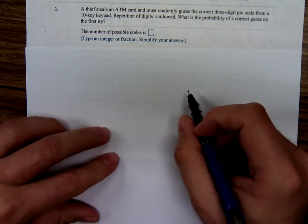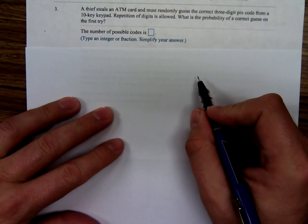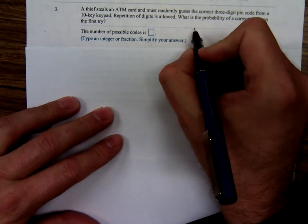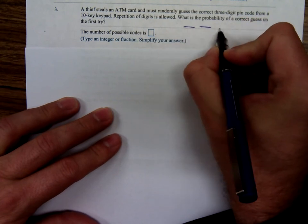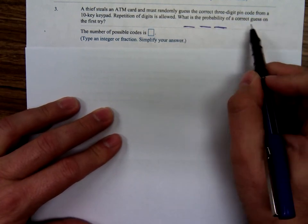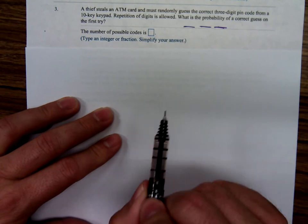Okay, now we're ready for problem three. A thief steals an ATM card and must randomly guess the correct three-digit PIN code from a 10-keypad. Repetitions are allowed. So there's three digits. What's the probability of a correct guess on the first try?